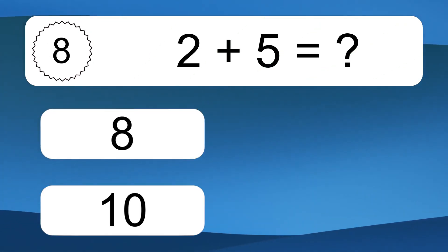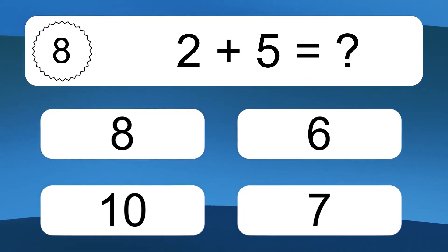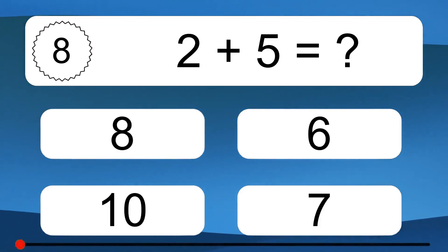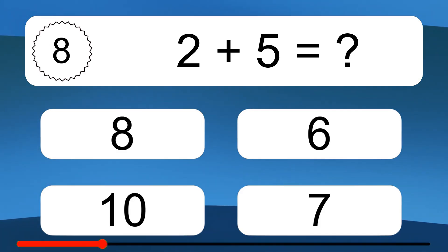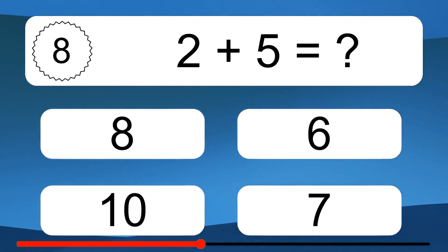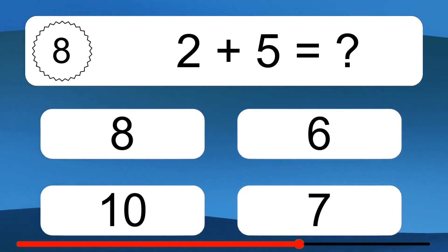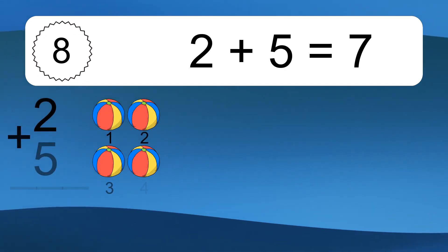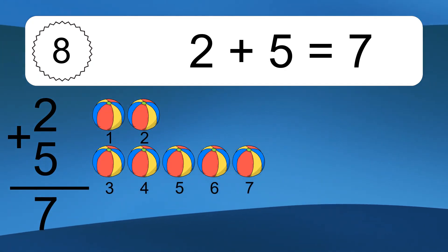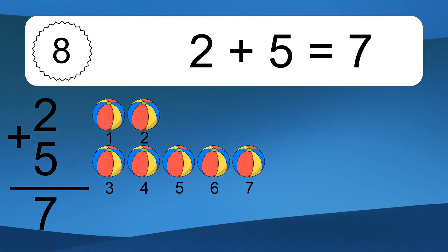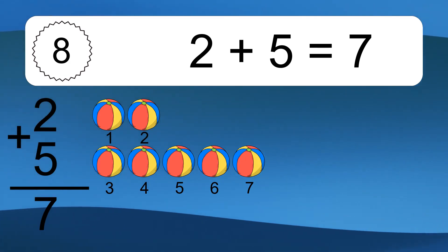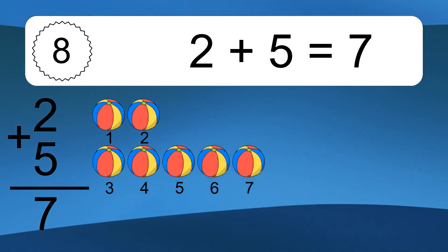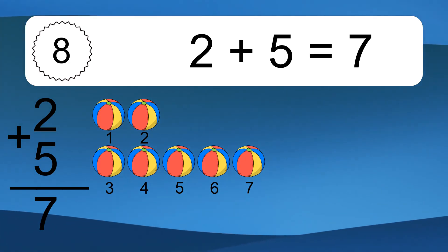2 plus 5 equals what? 2 plus 5 equals 7. Let's count it: 1, 2, 3, 4, 5, 6, 7.